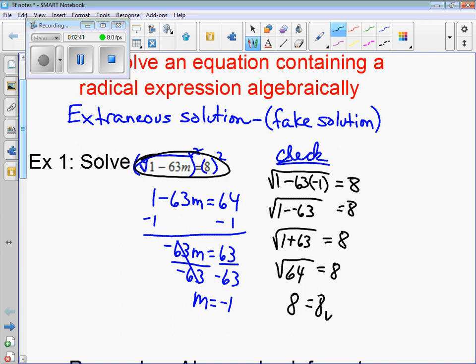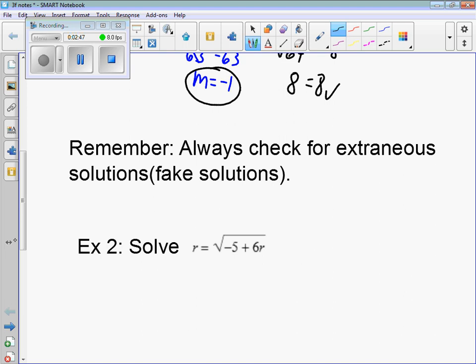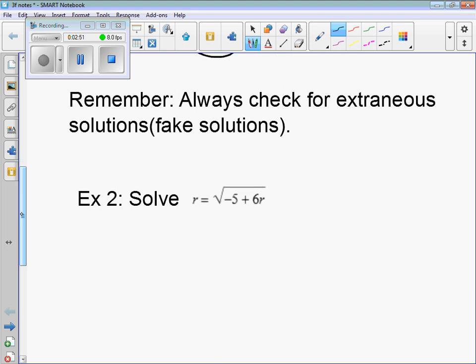Awesome. So therefore, m equals negative 1 is the solution. Remember, always check for extraneous solutions. These are extraneous solutions, they're fake solutions.